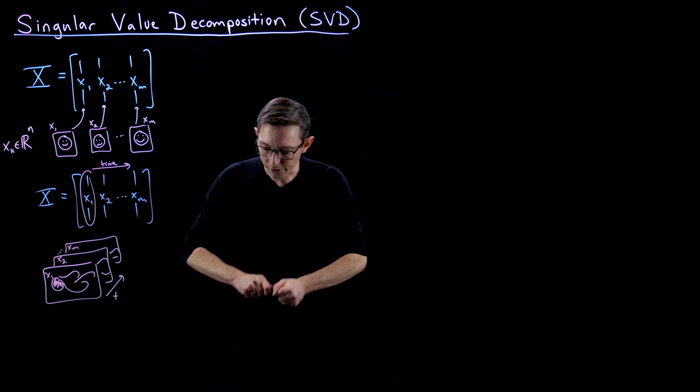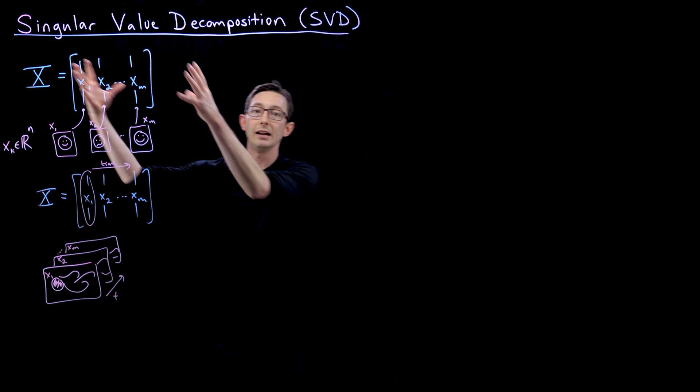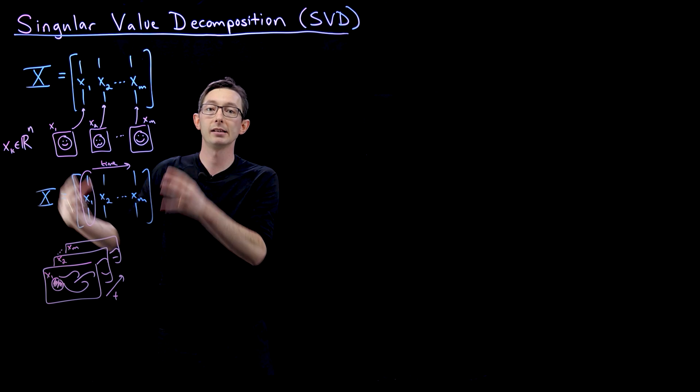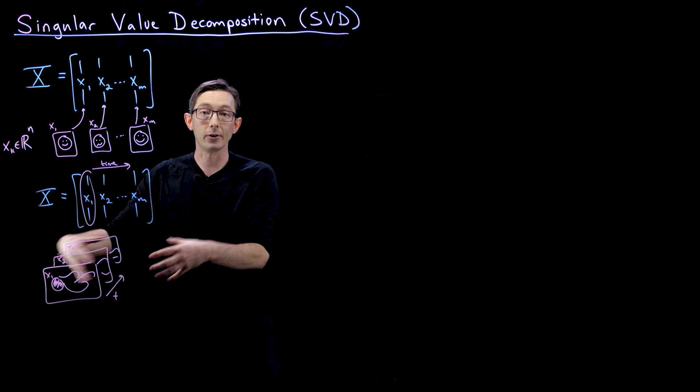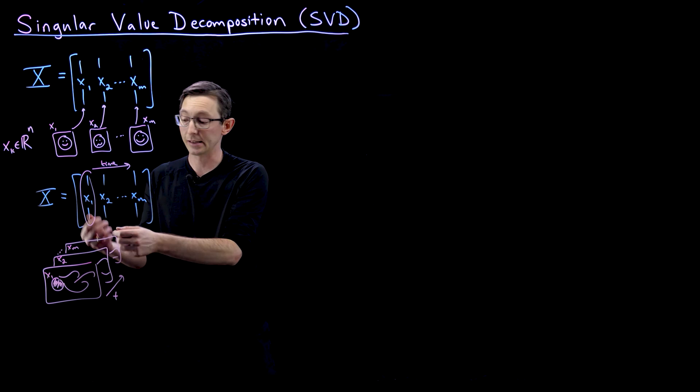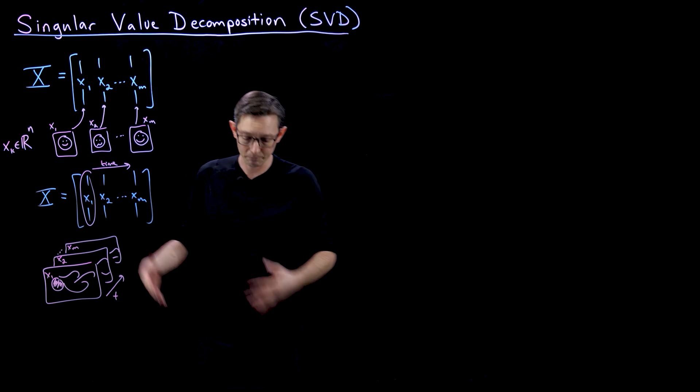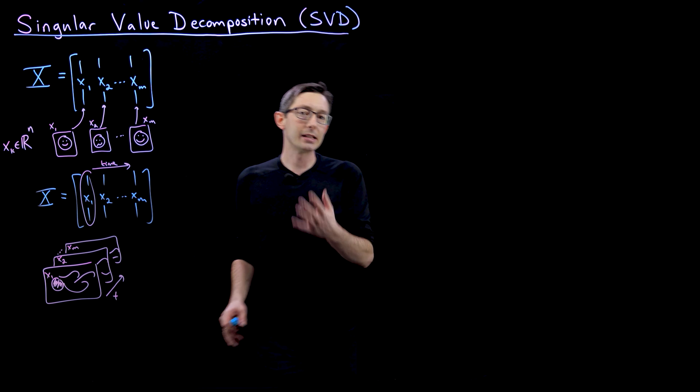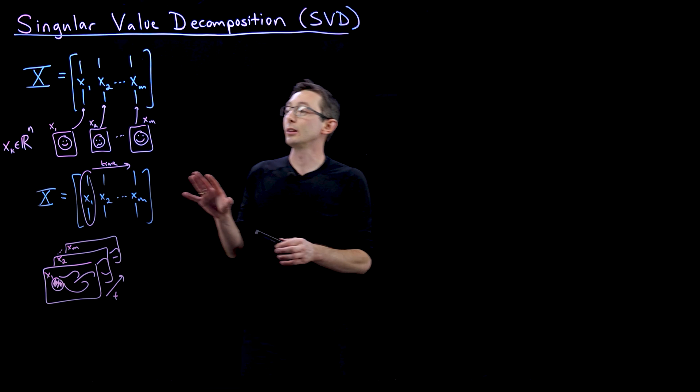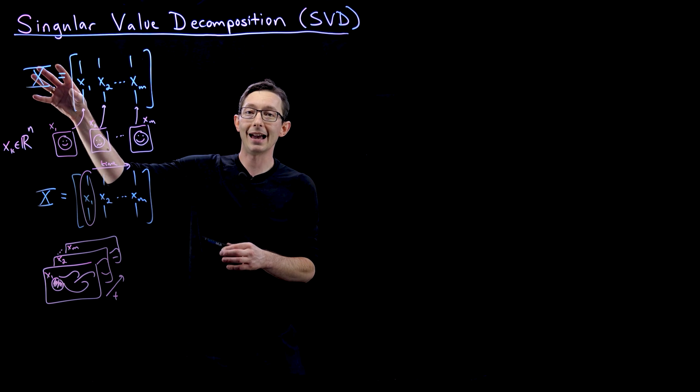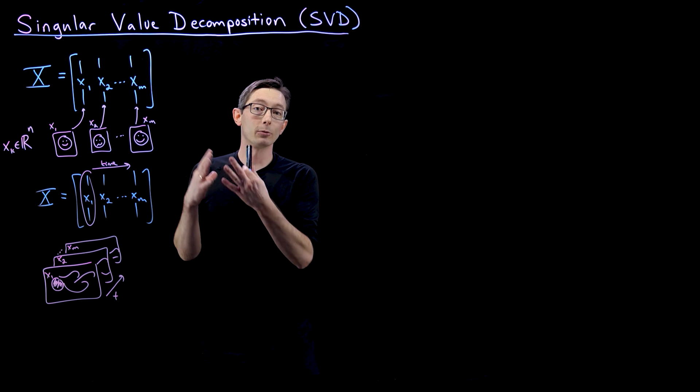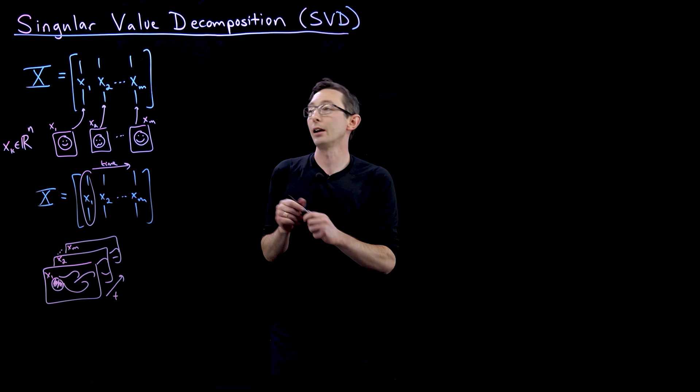So there's lots of ways you can build a data matrix from either a library of human faces or from a flow field that's evolving in time or some other physical process that you're measuring that's evolving in time. And so what the singular value decomposition is going to allow us to do is take this matrix X and decompose it or represent it as the product of three other matrices.